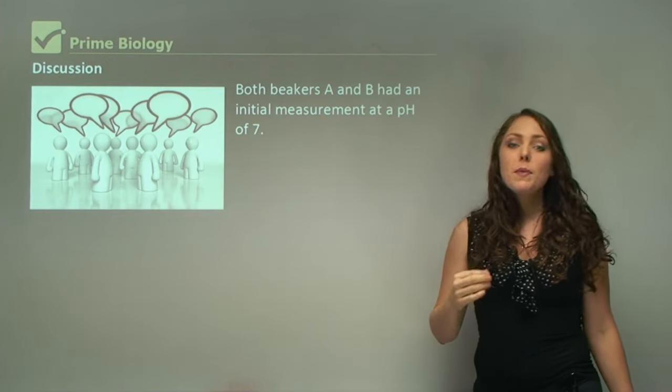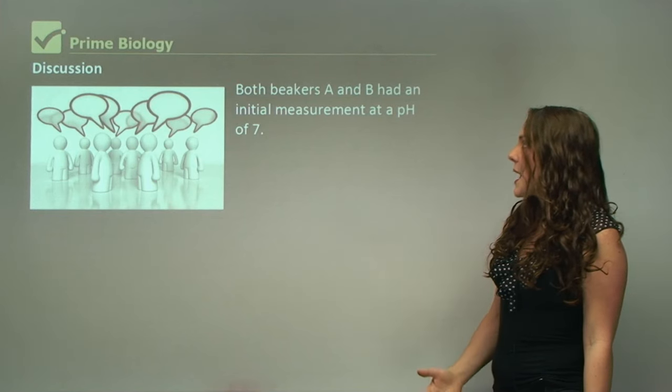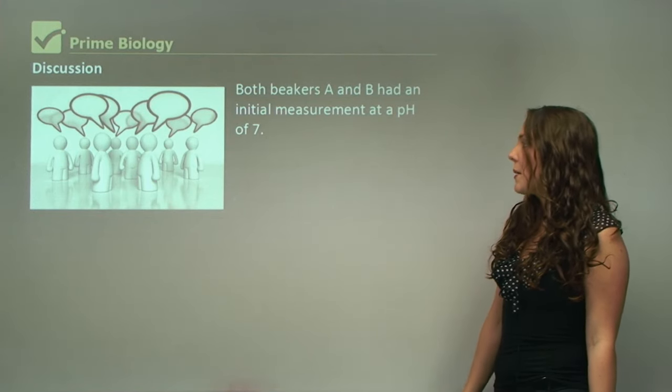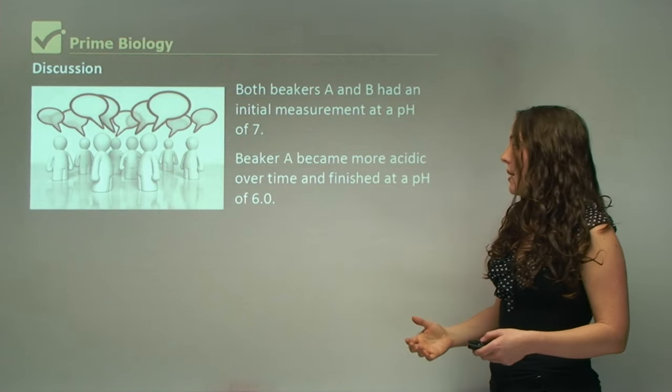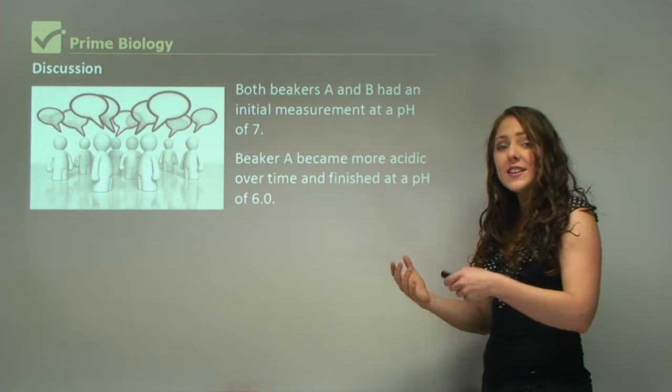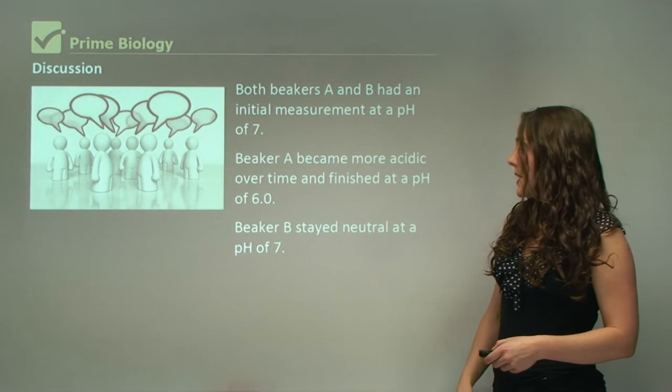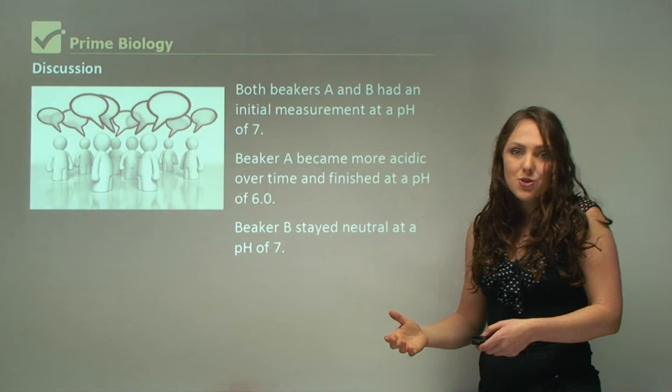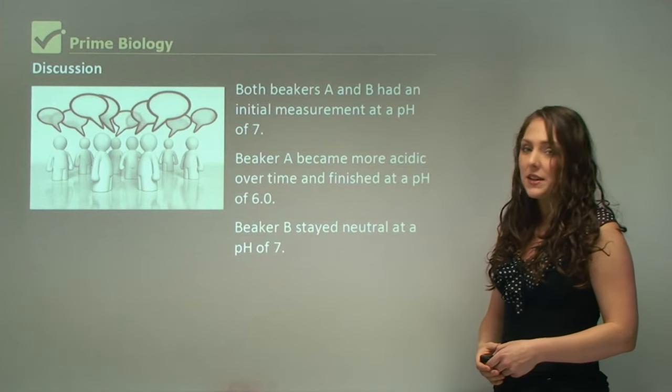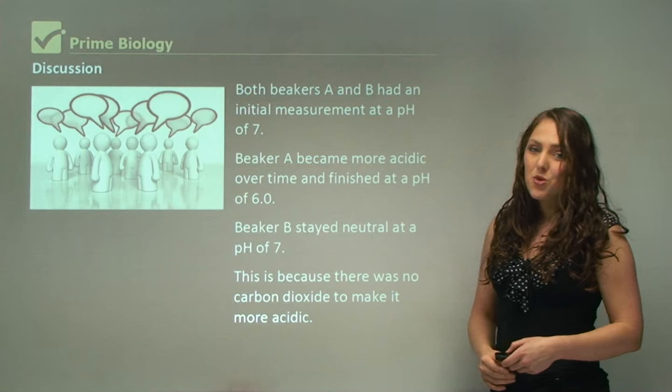We always talk about a discussion after doing these experiments. Both beakers A and B had initial measurement at pH of seven, but beaker A became more acidic over time and finished at pH of six. This is something you would have to put in your discussion. Beaker B stayed neutral at pH of seven, and you can explain these as well because it is the control, so it's very important to have beaker B as well. This is because there was no carbon dioxide to make it more acidic.